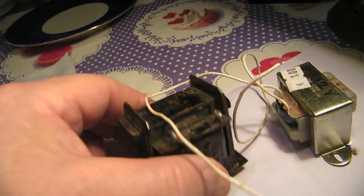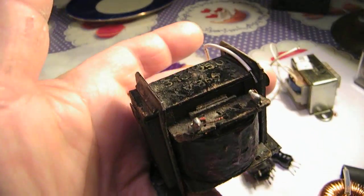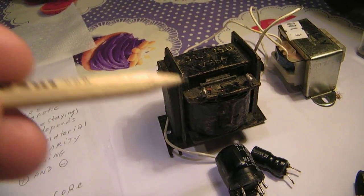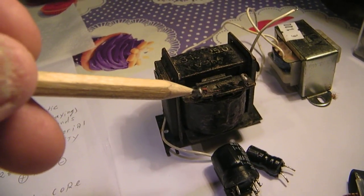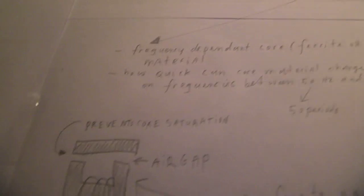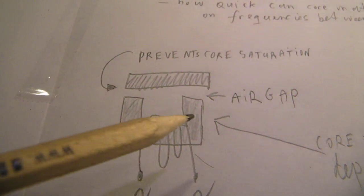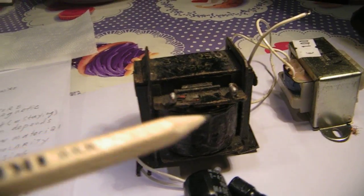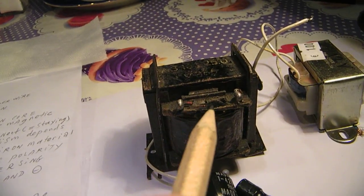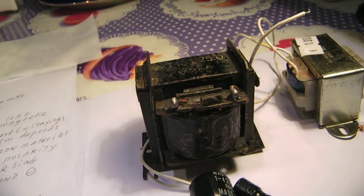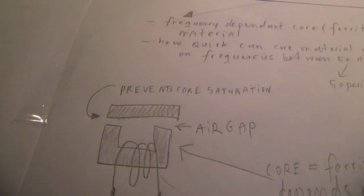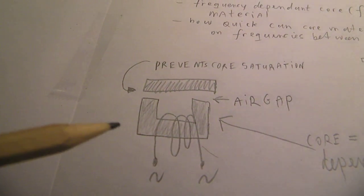Here you see for instance a choke coil from a very old television set from the 1970s. And such a choke coil has typical properties. For instance, here you can see that there is an air gap in such a choke coil. You cannot see it here, but when you open it, take it completely apart, you will find a small piece of isolating material here inside that coil. And it all has to do with the properties from such a coil.